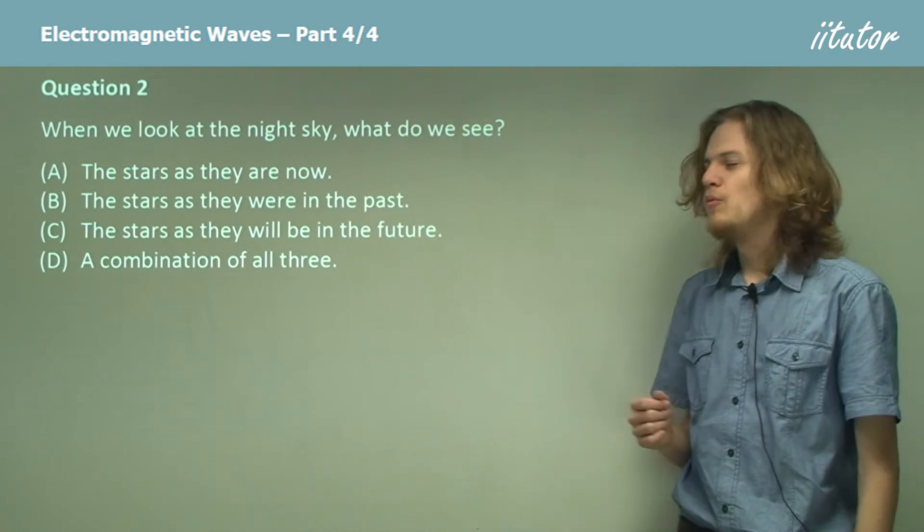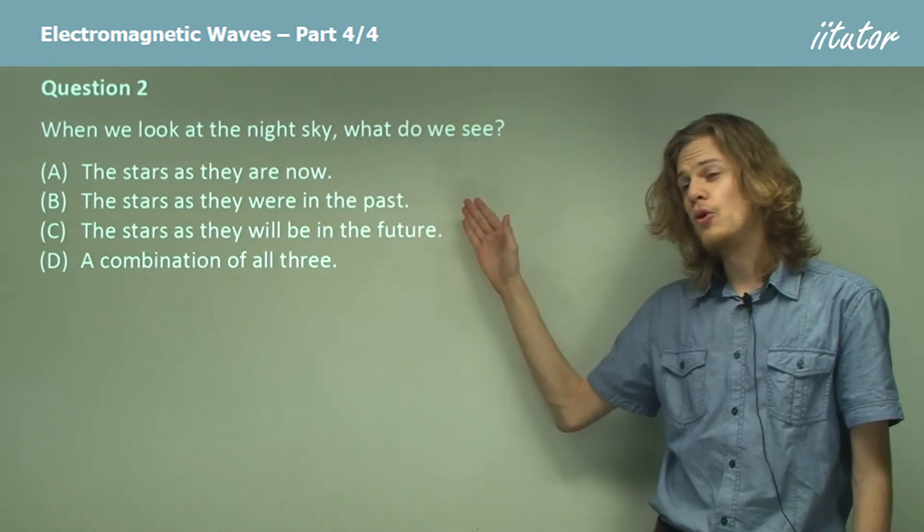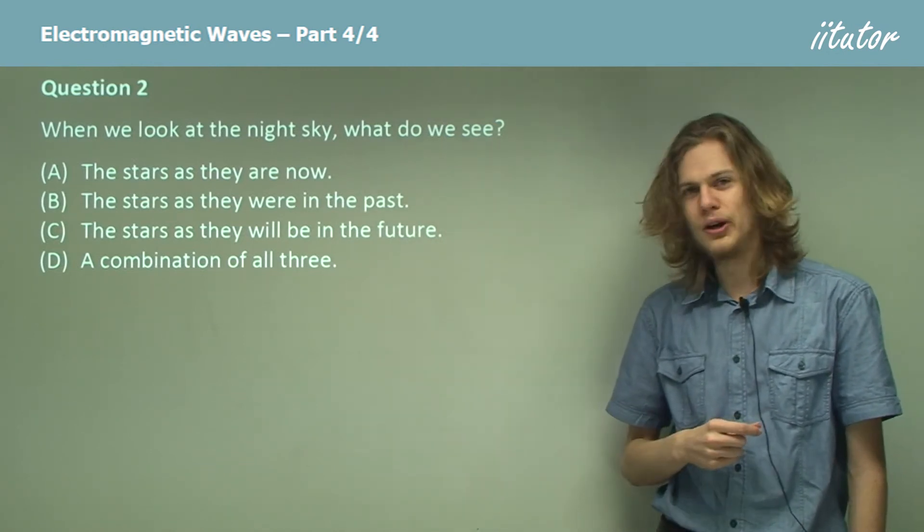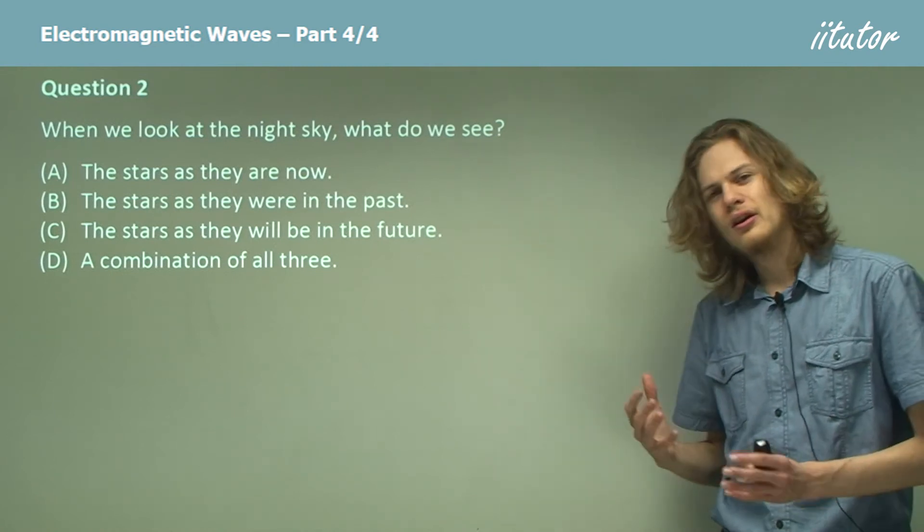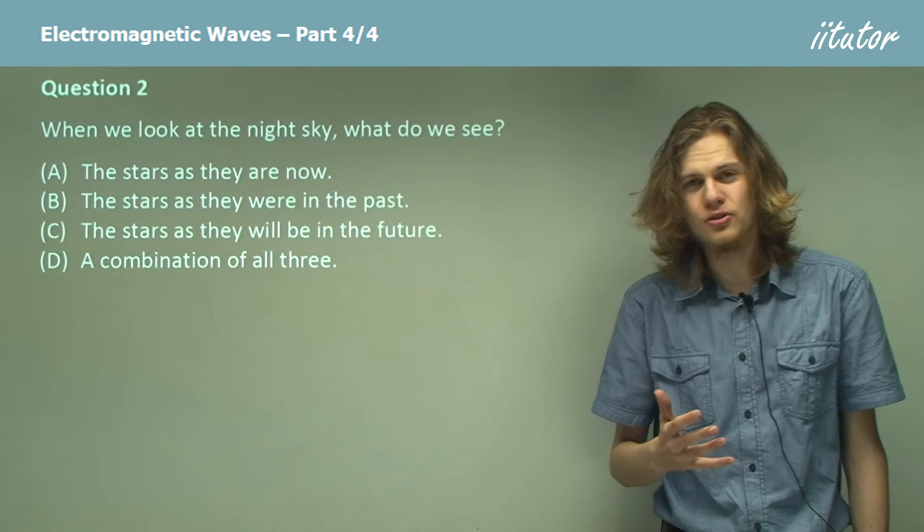When we look at the night sky, what do we see? Do we see the stars as they are now, as they were in the past, as they will be in the future, or a combination of all three? Well, it turns out that, as we know, light doesn't travel instantly. It takes time for light to travel.